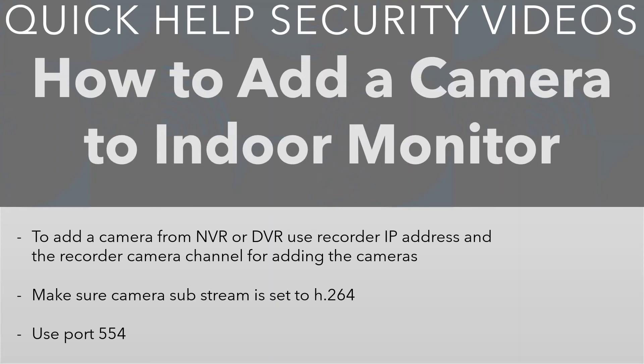Before we go over to the live view and show you how to add it on the monitor, I'm going to give you three top tips. To add a camera from a recorder or an IP camera we're going to need the IP address. Then, if you have the IP address from your recorder, choose whatever channel camera you want to add — for example channel 4 for your front door camera. Also make sure that whatever camera you add, the substream is set to H.264 — if you don't set it to H.264 it's not going to work.